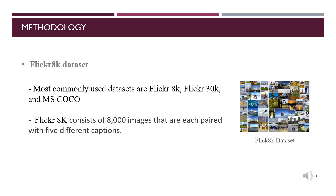Datasets differ in several ways, including the number of images, caption format, number of captions per image, and image size. The most commonly used datasets for image captioning are Flickr 8K, Flickr 30K, and MS COCO. The dataset used for this study is Flickr 8K because of its small size, so the model can be trained easily on any laptop, and most importantly it is available for free. Flickr 8K consists of 8000 images divided into two folders: the first contains images, and the second contains identifiers of images. Each image is linked to five different captions, and each of these captions describes the elements and the events represented in the image. The dataset contains a linguistic variety that can be used to describe each image.